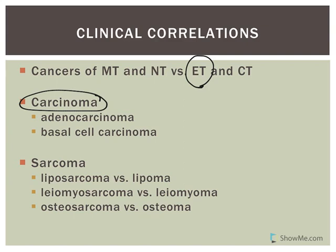Sometimes the term adenocarcinoma is used. Adeno is a prefix that means glandular, so this is a cancer that originated in glandular tissue — like many breast cancers, which come from glandular epithelial tissue. Basal cell carcinoma is a type of skin cancer named because the cells resemble the basal layer of the skin. If you see the term sarcoma, these are malignant tumors of non-epithelial tissue — typically connective tissue — and they are relatively rare compared to carcinomas.